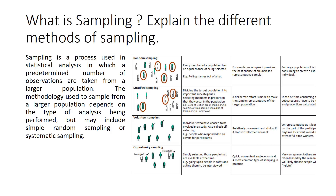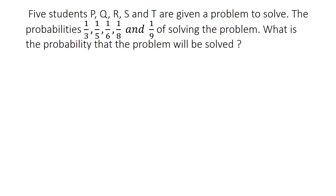Next question: what is sampling and what are the different methods? Sampling is a process used in statistical analysis where a predetermined number of observations are taken from a larger population. It is broadly classified into four categories: random sampling, where every member has an equal chance of being selected; stratified sampling, where the population is divided into strata and samples taken from each; voluntary or convenient sampling; and opportunity sampling, selecting those who are available.